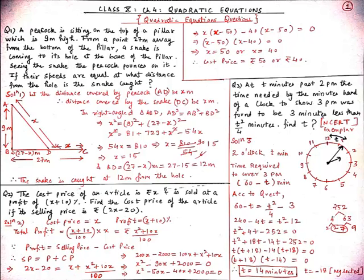Our second question is: the cost price of an article is Rs. x and it is sold at a profit of (x + 10)%. Find the cost price if its selling price is Rs. (2x − 20). According to the question, the cost price is Rs. x and profit percent is (x + 10). So total profit = cost price × profit% / 100 = x(x + 10)/100 = (x² + 10x)/100. We also know that selling price = profit + cost price.